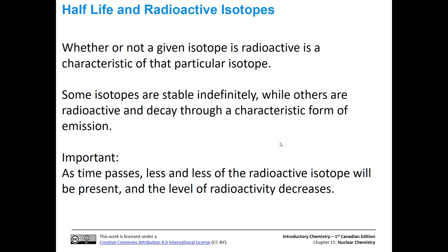For instance, some isotopes are stable indefinitely, like carbon-12, while others are radioactive and decay through a characteristic form of emission, like we saw in some of those nuclear equations. They can decay by alpha particle emission, beta particle emission, or positron emission.